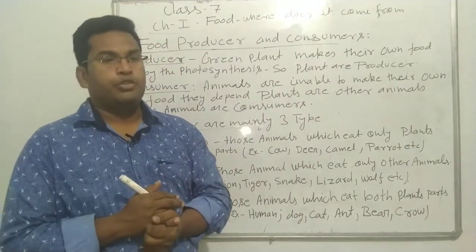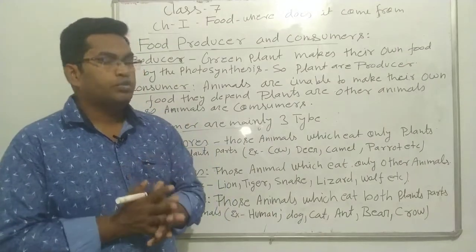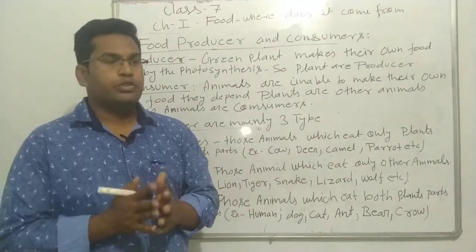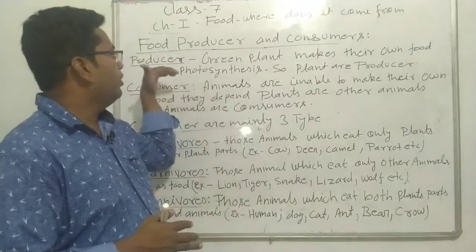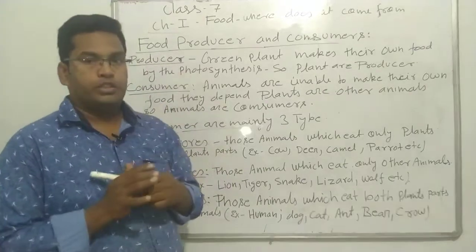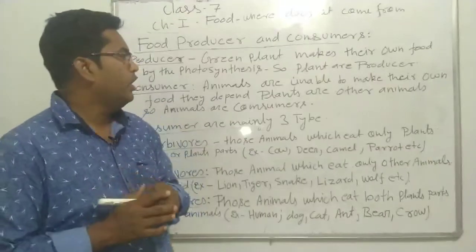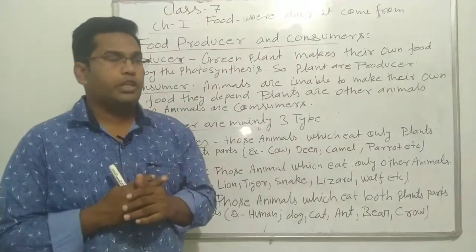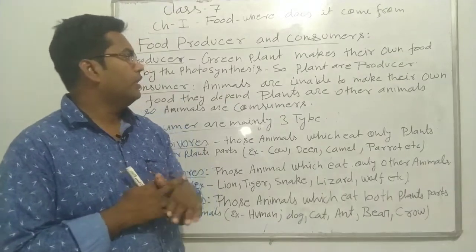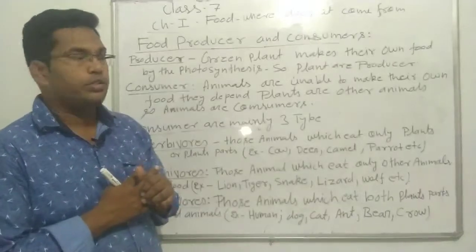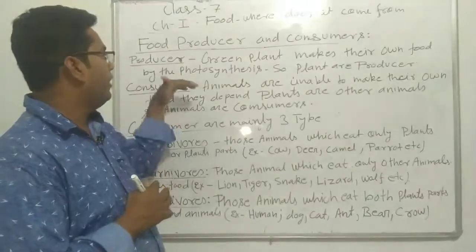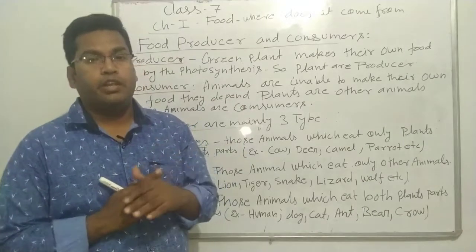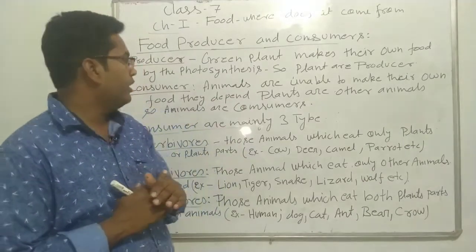So, the producer is the one who produces their own food. All the green plants are called producers, which have green leaves.